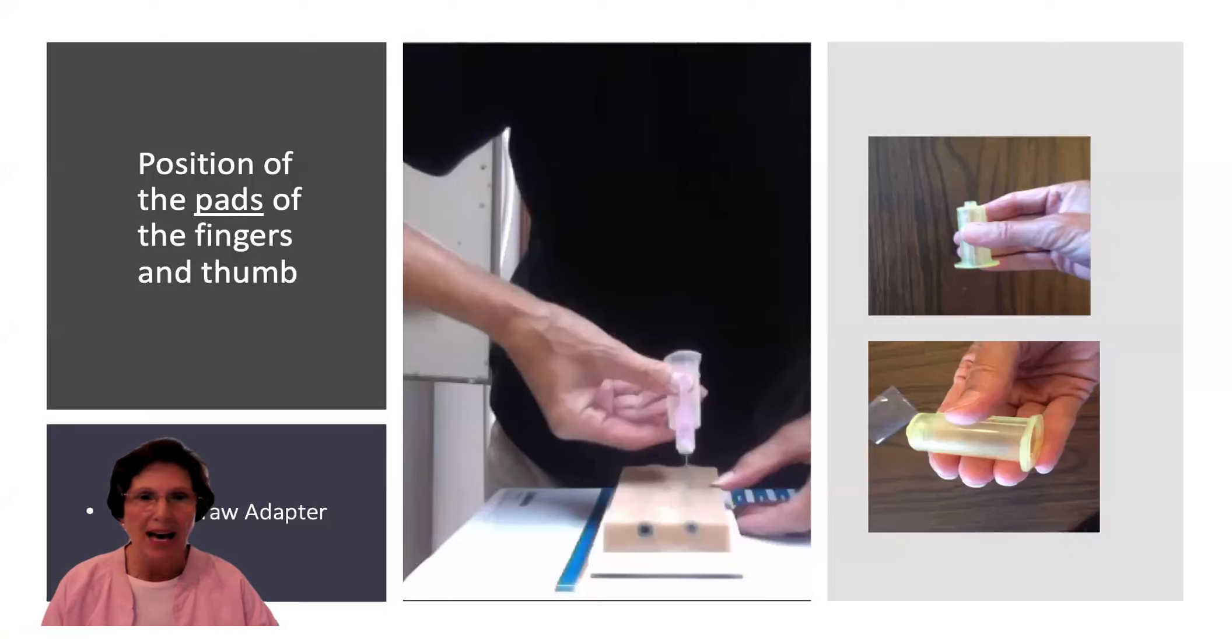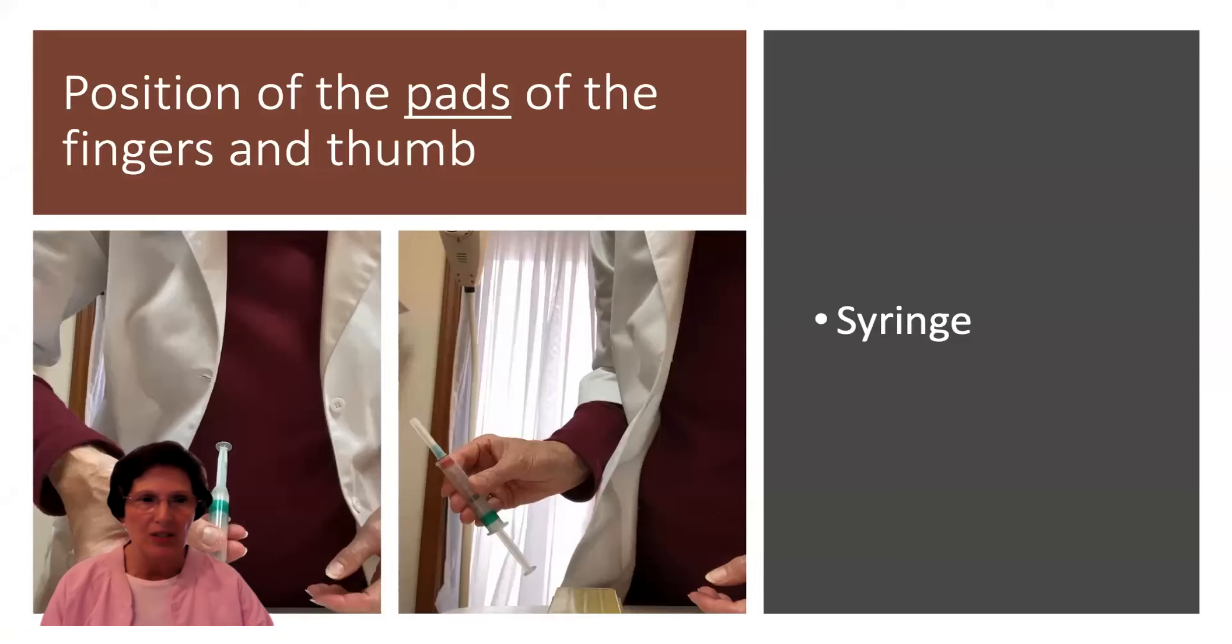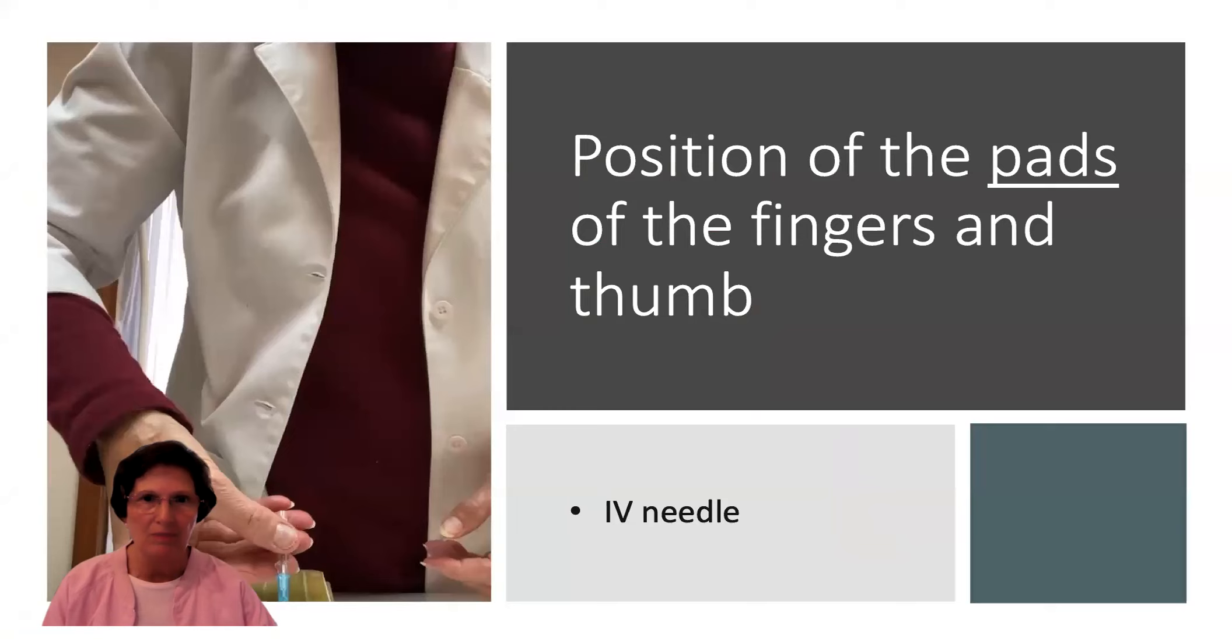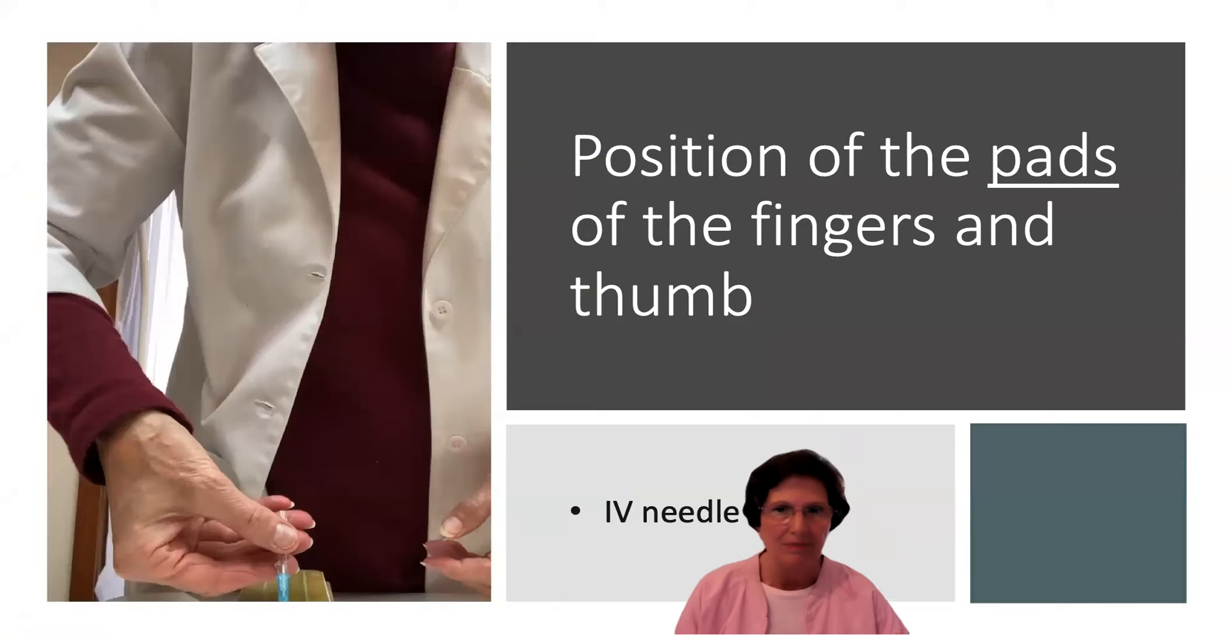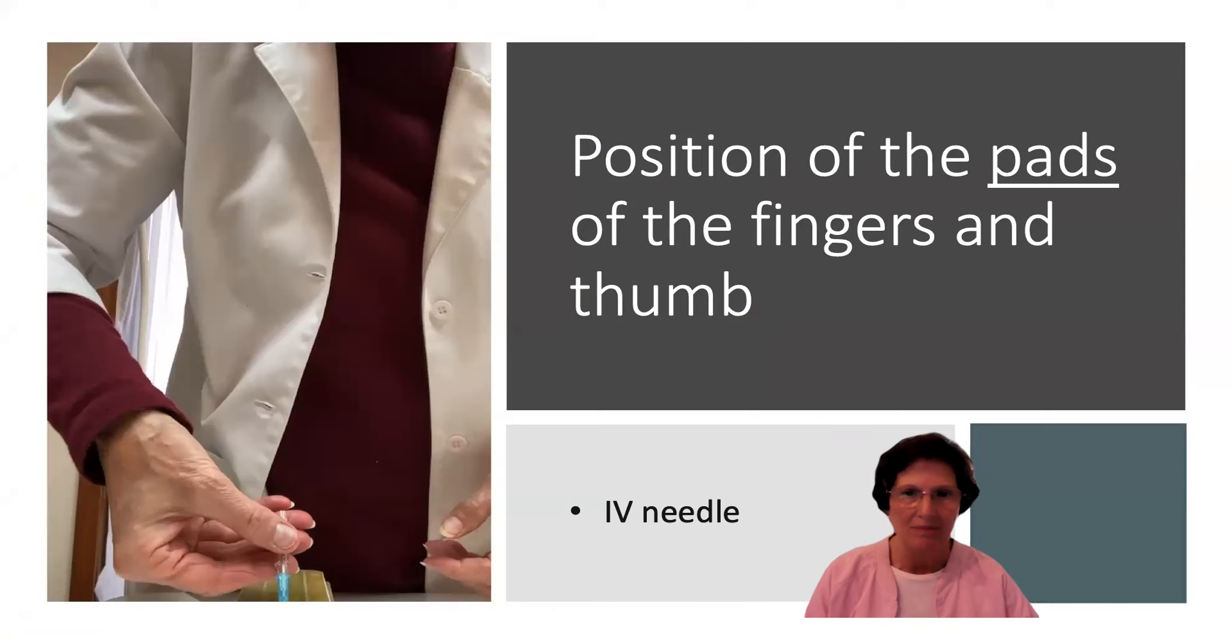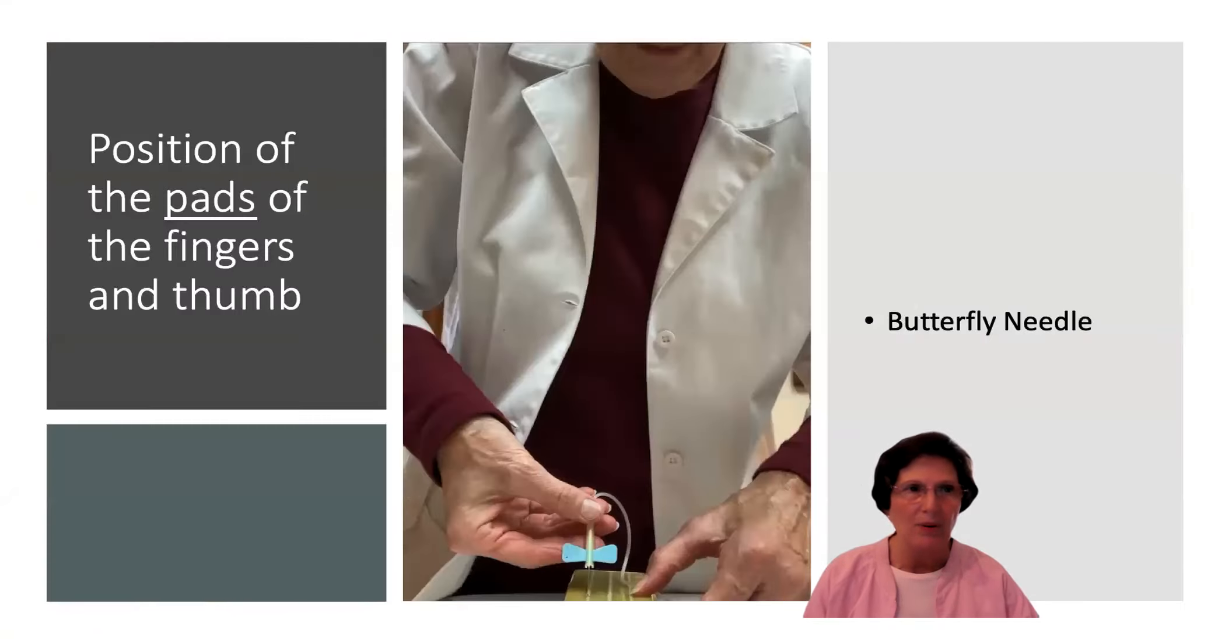So the position of the pads of the fingers and thumbs we see here with a blood draw needle. Four fingers underneath, thumb on top over the middle finger. Got it? We see it with the syringe. Same position. We see it with the IV needle. Same position. And we see it with the butterfly needle. And these are different. I know that what you were taught or what you picked up on your own or what you developed on your own. But we're adding science to this skill, and science dictates a different way than what has currently been done in the past.